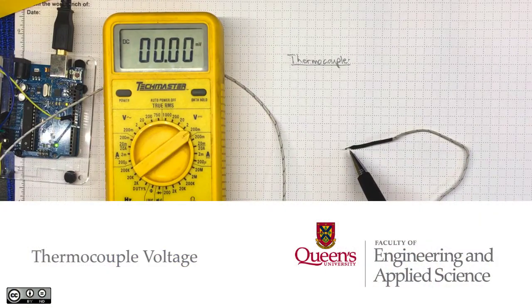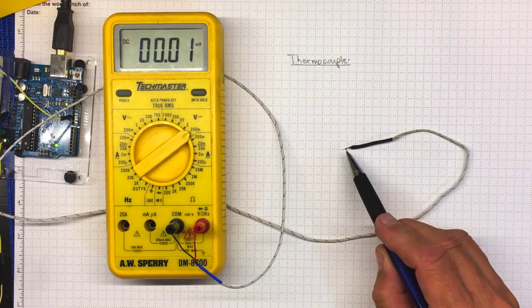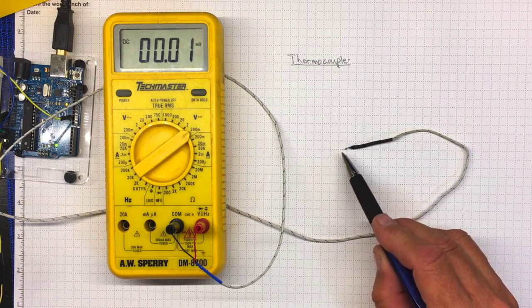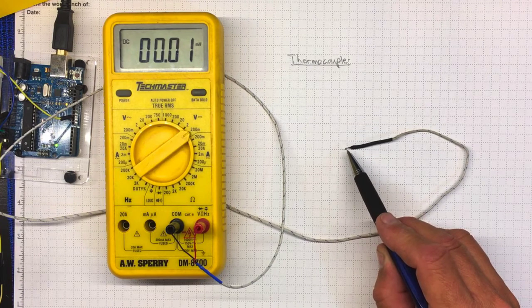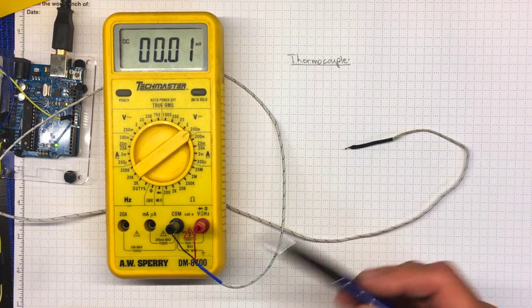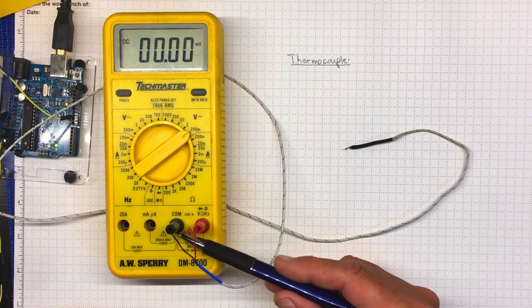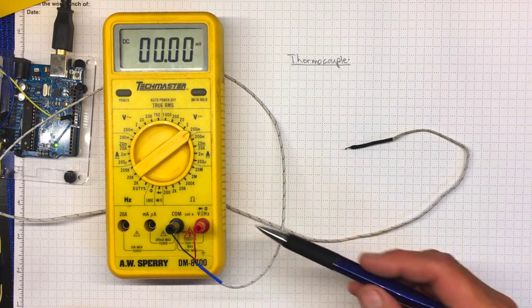This is a thermocouple. It's made up of two small wires of different alloys so that it produces a little bit of an electrical difference, a little bit of a voltage difference where they're joined together. It also produces a little bit of a voltage difference over here where they join back together through this meter to a different metal.